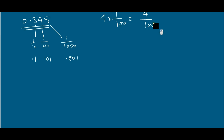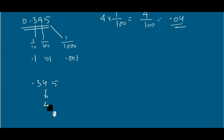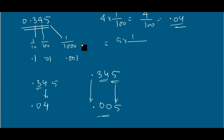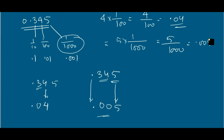4 into 1 by 100 equals 4 by 100, which equals 0.04. Or, using the shortcut method with 0.345: take down 4, keep the decimal, and replace 3 with 0, giving 0.04. For the place value of 5: take down 5, keep the decimal, and write as many zeros as there are digits before 5 — that is 3 and 4, so two zeros — giving 0.005. Mathematically: 5 into 1 by 1000 equals 5 by 1000 equals 0.005.